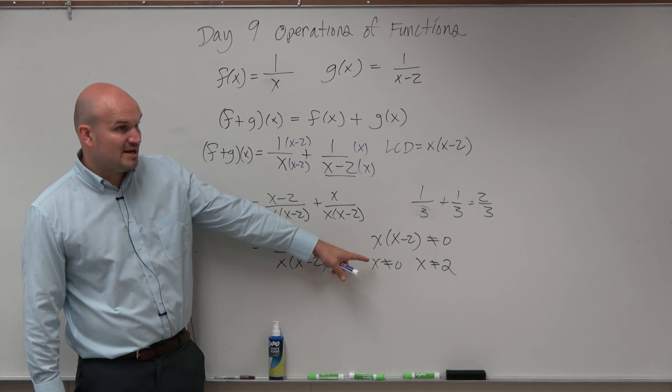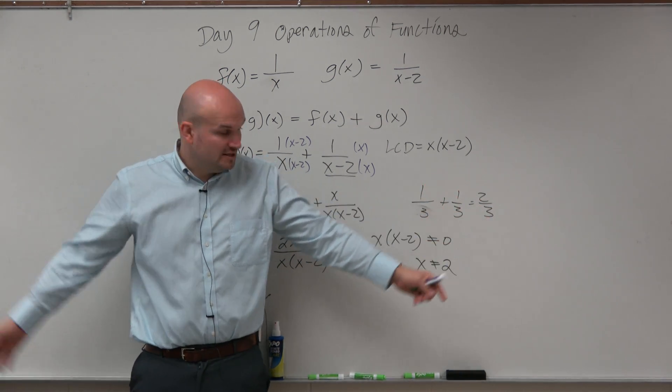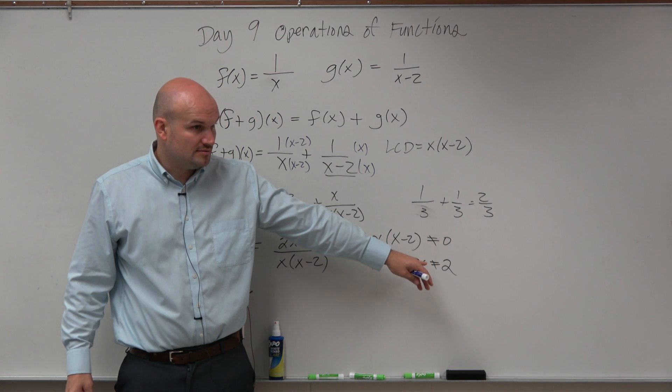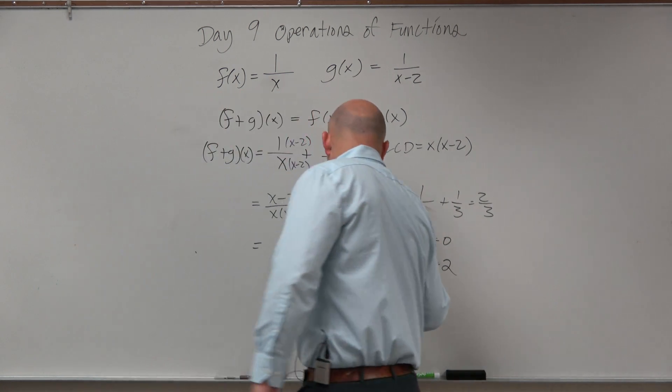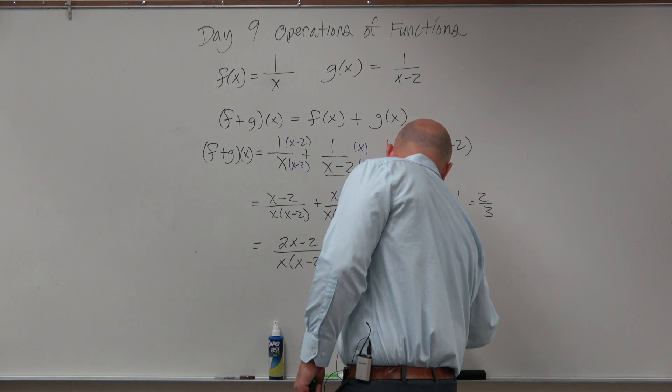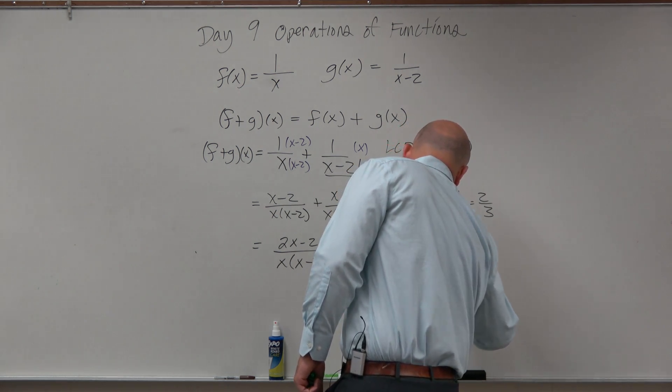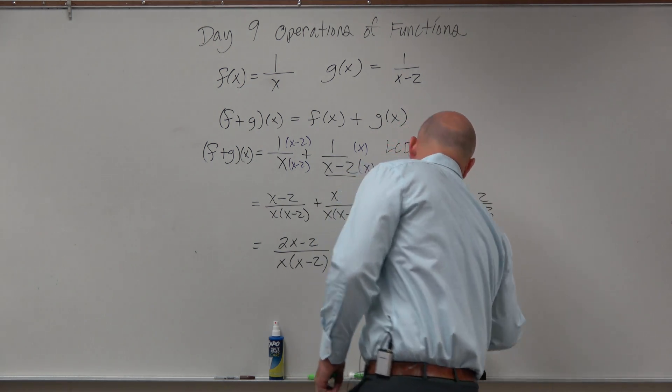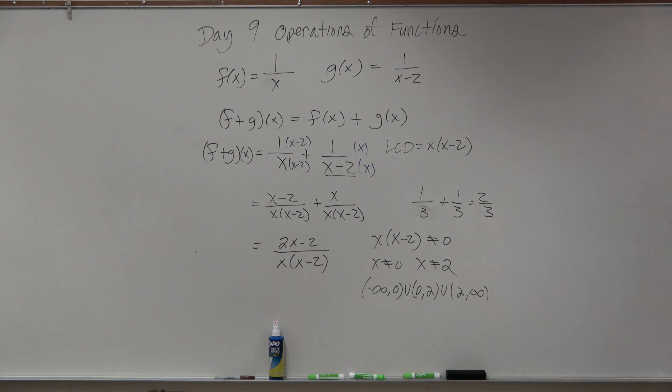So now, I need to write my domain where the domain is all the numbers except for 0 and 2. So your domain would be negative infinity to 0, union 0 to 2, union 2 to infinity. Okay? So that's exactly what you guys did.